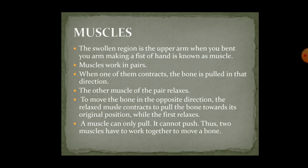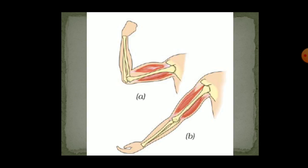To move the bone, as you can see in the picture, when you make a fist and bend your arm from the elbow a swollen region appears, and this swollen region is due to the muscles. When you relax your hand, the muscle comes back to its place and expands.